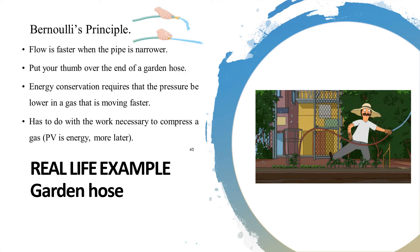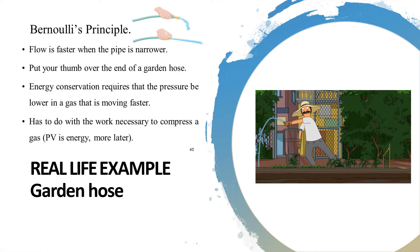When the garden hose is left free and the water flows freely, the pressure is high and the velocity is low. When you put your thumb over the nozzle,